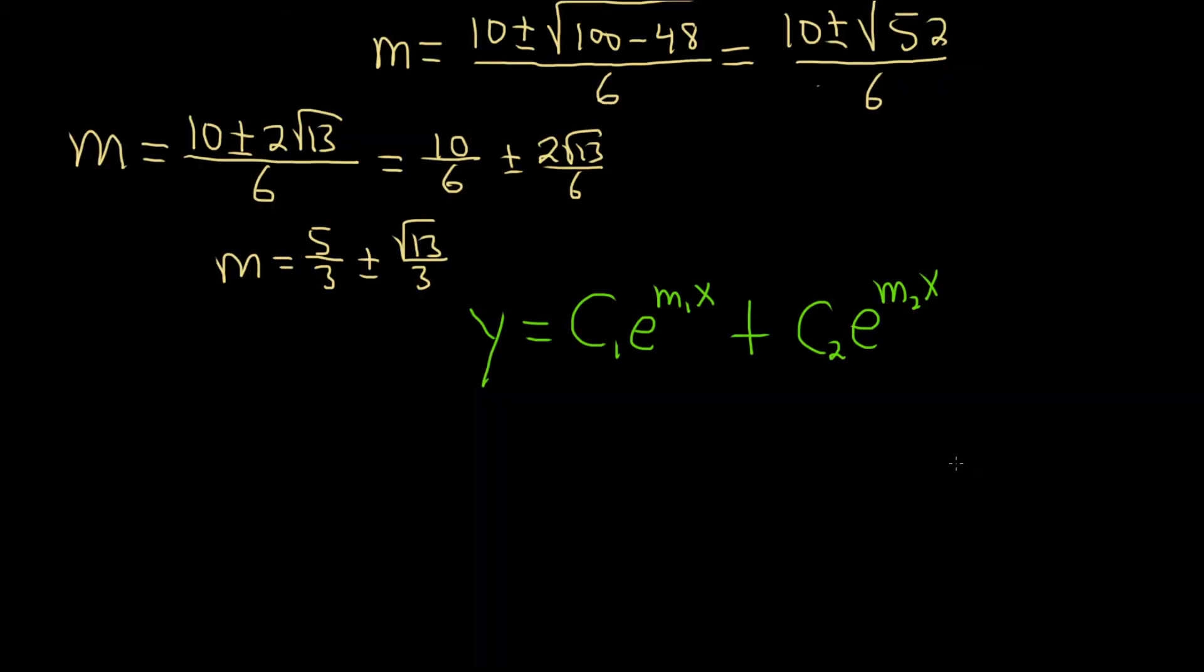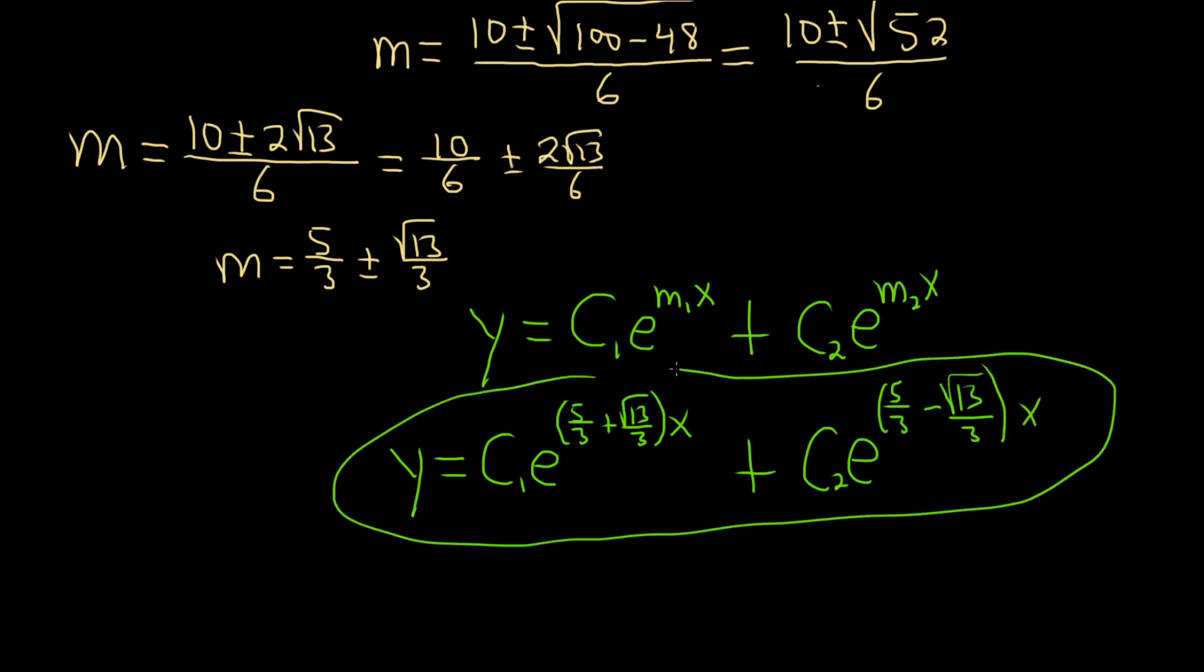And then we just plug in the m's into the formula. So y equals c1, e to the, let's take the plus first. So it'll be 5 over 3, plus the square root of 13 over 3, and then we have our x, plus c2, e to the 5 over 3, minus the square root of 13 over 3. Let me just fix that, make it look a little bit better. Square root of 13 over 3, x. Beautiful, and that would be the final answer to this problem.